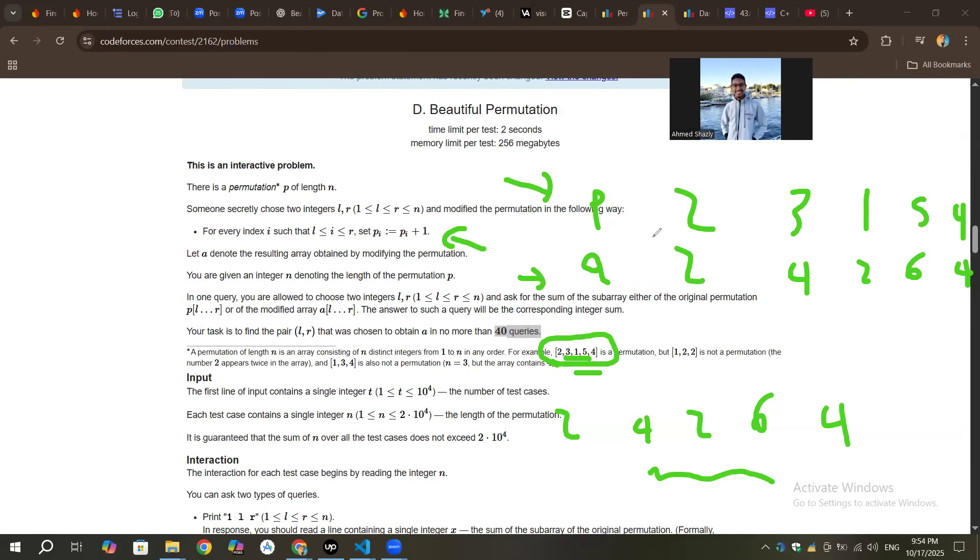So he will be answering us, what is the summation in this range? Like, what is the summation in the range in the permutation from L to R? What is the summation in the array A from L to R? And that's it. And we can only make at most 14 queries, doesn't include the output.